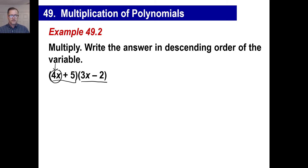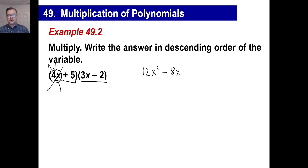So we'll do 4x times 3x, and that'll be 12 — and x to the first times x to the first is x to the second. Then 4x times negative 2, that'll be negative 8x. Now at this point, you are done with that part. Now move on to the positive 5.